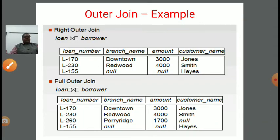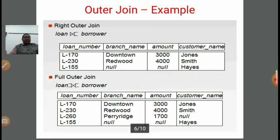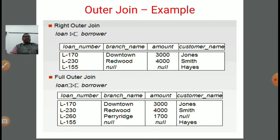Next is full outer join. In full outer join, we combine both left outer join and right outer join. The combination of both is called full outer join.